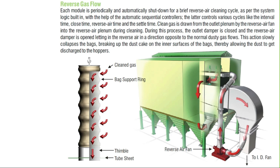This reverse air action slowly collapses the bags, breaking up the dust cake on the inner surface of the bags, thereby allowing the dust to get discharged into the hopper. From the hopper, the collected material is conveyed out by a rotary airlock and belt conveyor.